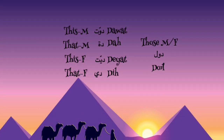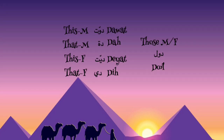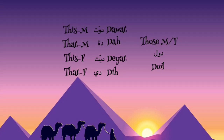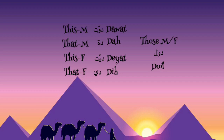In the Egyptian dialect, we have five main demonstratives that we use in our daily lives. First, we're going to learn them together, and then we're going to have example pictures using these demonstratives. Then we're going to move on to the example sentences. So stick till the end so that you have as much practice as possible.